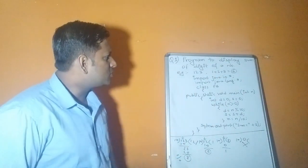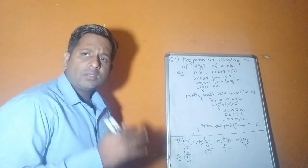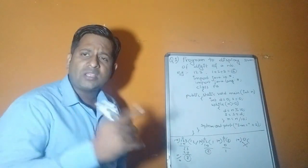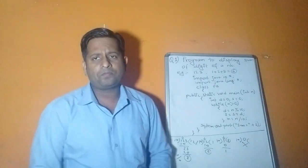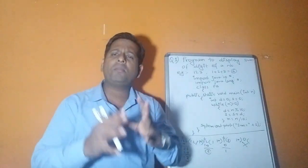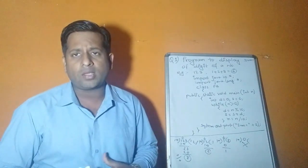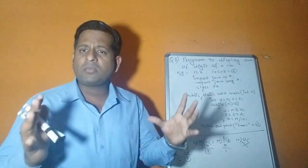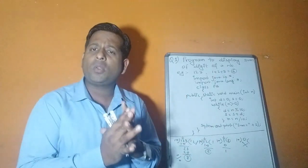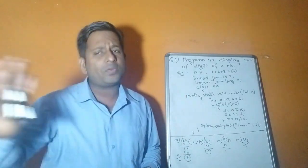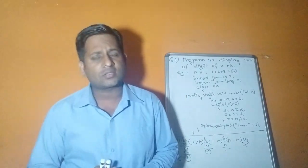Program 5: display the sum of digits of a number. For example, if the number is 123, the sum of digits will be 1 + 2 + 3 = 6.